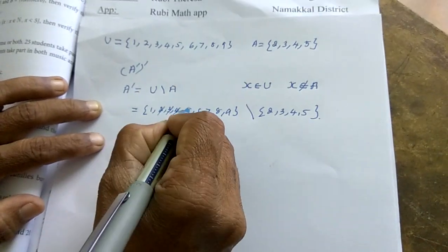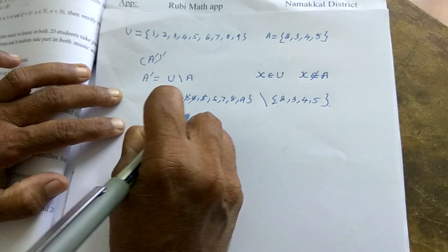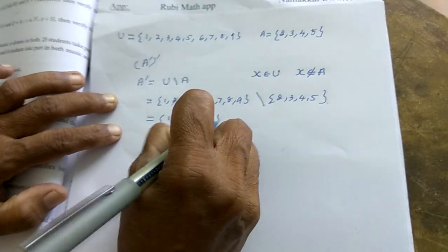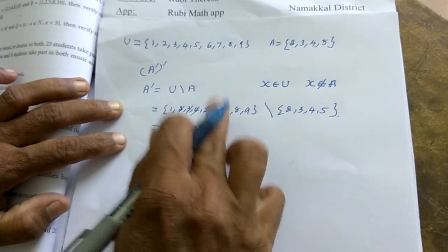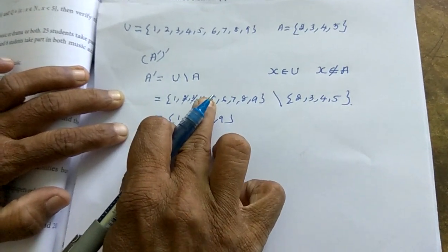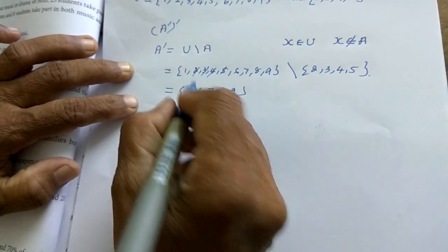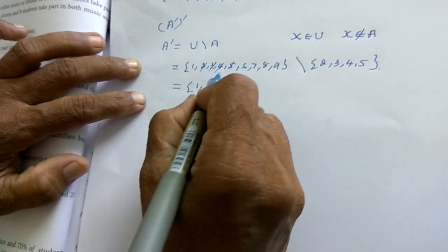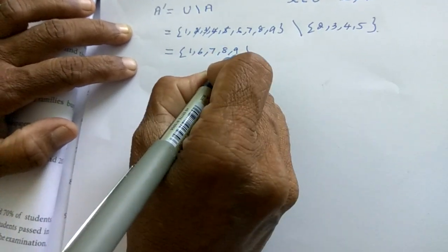So you have to just, for the late bloomers, I am striking out the elements: 2, 3, 4, 5. So what are the elements remaining here? 1, 6, 7, 8, 9. So these are the elements that belong to universal set alone.